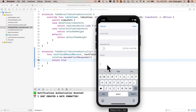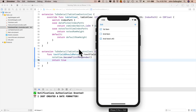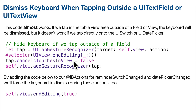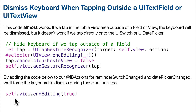We also want to dismiss the keyboard when the user taps outside of a UITextField or UITextView. Tapping anywhere on the table view area outside a field will dismiss the keyboard, but it doesn't work automatically if the user taps directly on a UISwitch or the UIDatePicker. To handle those, we'll add self.view.endEditing(true) to the IB actions for those controls — that'll force the keyboard to dismiss if it's open.